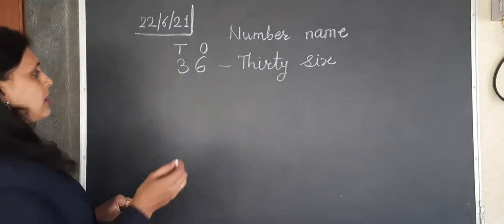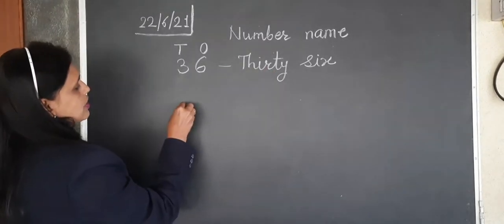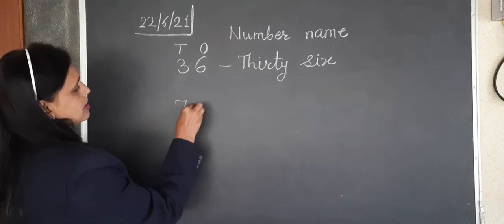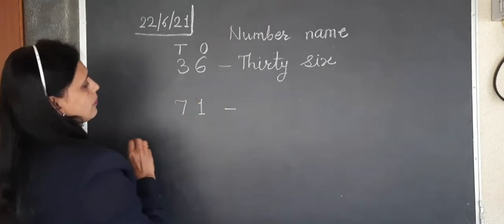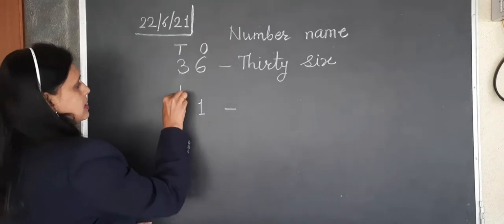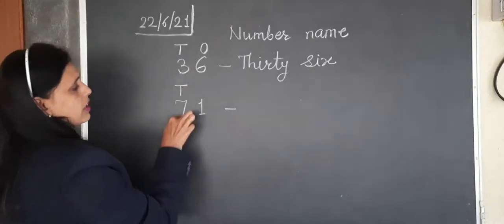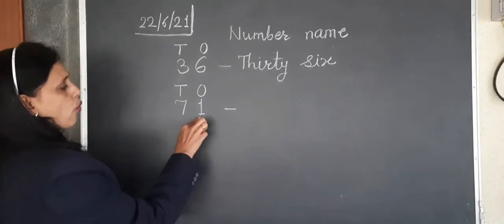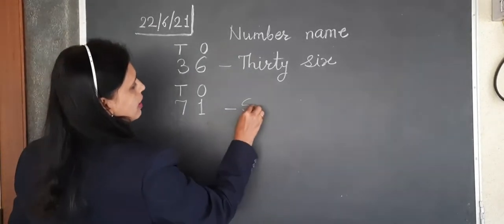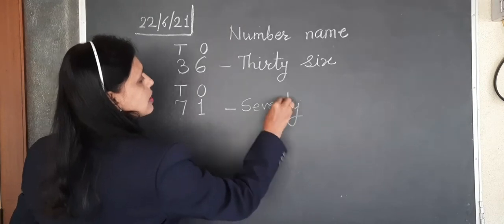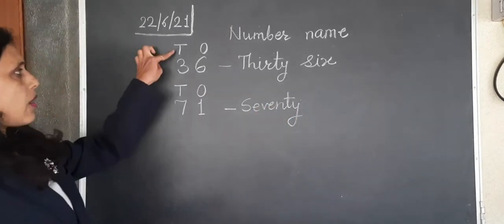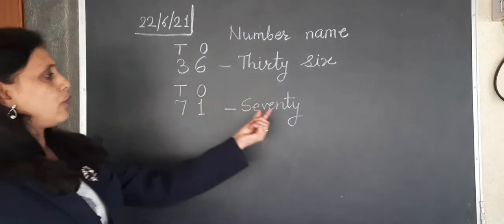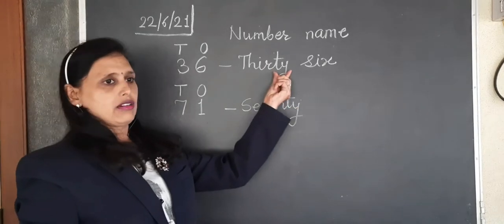One more number we will take. Here we will take 71. So 7 is coming under the tens column, so 70, and this one is 1, so 71. See here, those numbers are coming under the tens column, we are adding T-Y here.